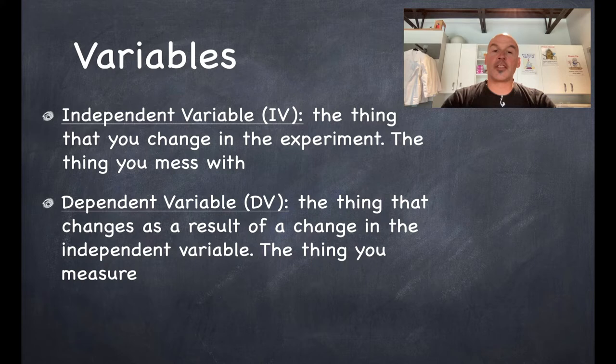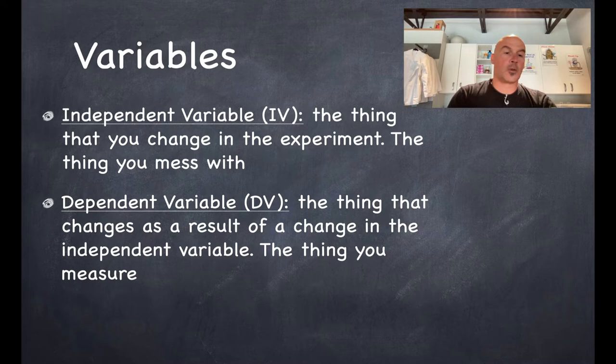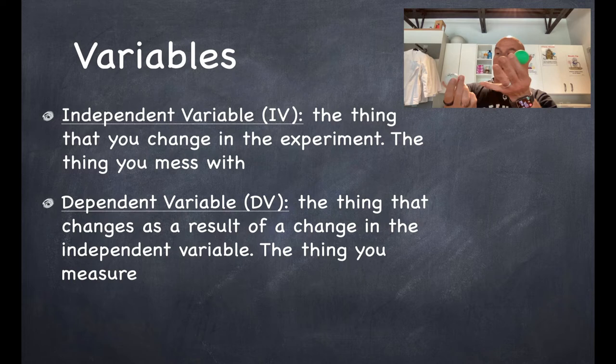So the dependent variable is the thing that changes as a result of the change that you make in the independent variable. So the change that I made in the IV is going to be the density. The thing you measure, I decided, is going to be the bounce height.